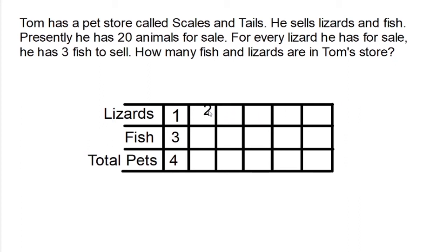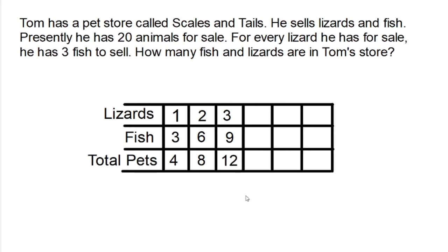If he has one lizard, how many fish? It says for every lizard he has three fish. That would be four total pets. So now we're going to continue to fill in our table until we have enough information to solve the problem. If he has two lizards, that means he must have six fish, and two plus six would be eight pets. Eight is not enough — he has 20. So let's go on.